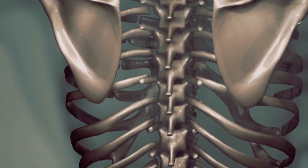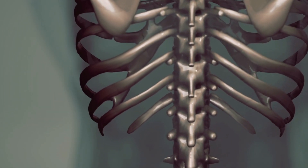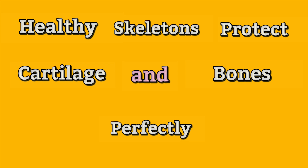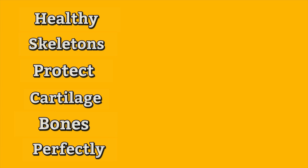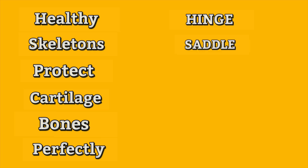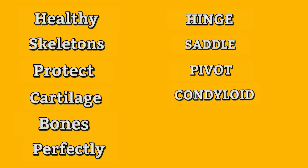The way that we're going to memorize these joints is by using a mnemonic — specifically this one right here: Healthy Skeletons Protect Cartilage And Bones Perfectly. Healthy is for hinge, skeletons for saddle, protect for pivot, cartilage for condyloid, bones for ball and socket, and perfectly is for planar.